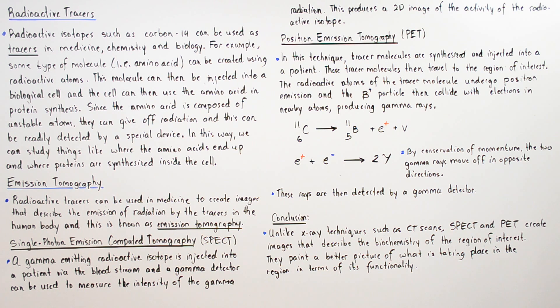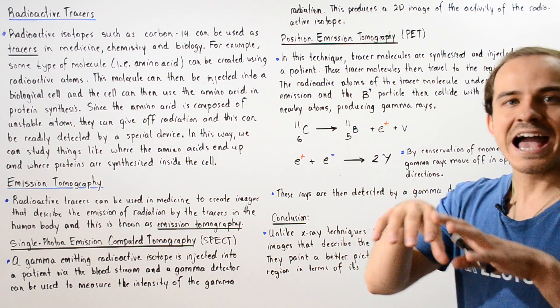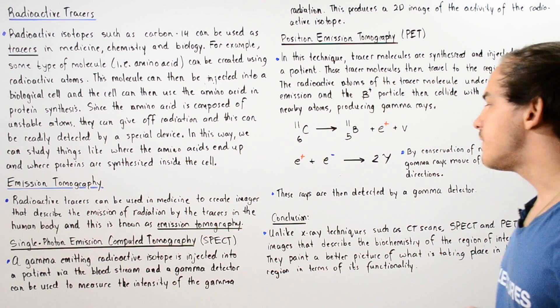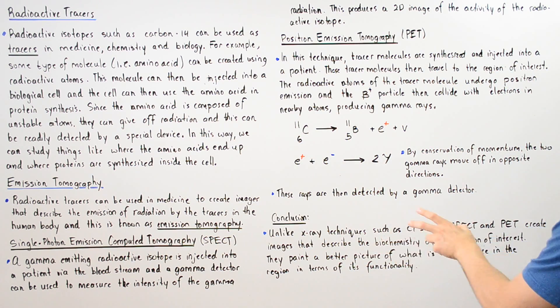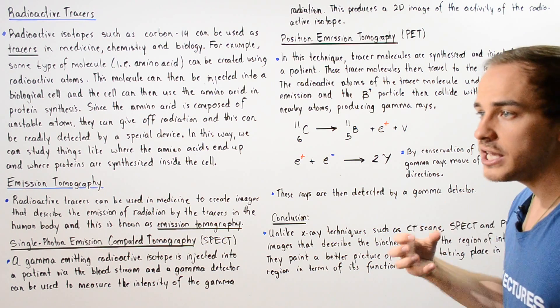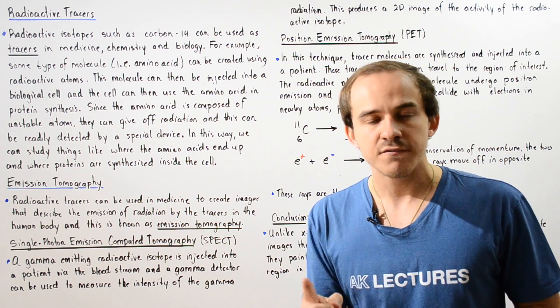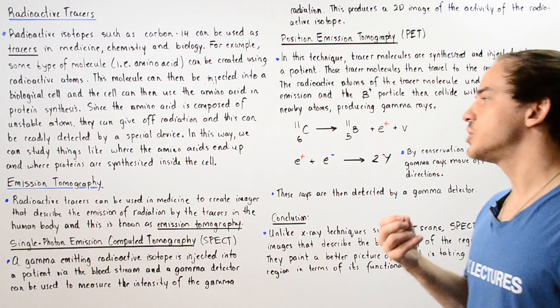Unlike x-ray techniques such as CAT scans or CT scans, SPECT and PET techniques create images that do not describe the actual structure of our region, but rather describe the biochemistry of that region of interest. They paint a better picture of what is actually taking place within that region in terms of biological functionality.